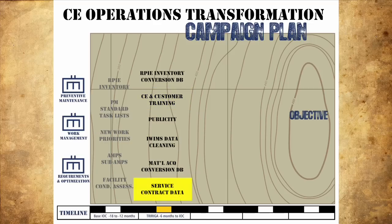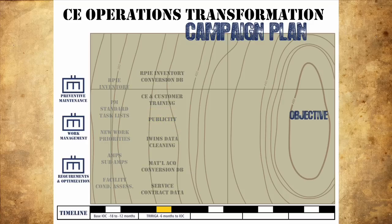Because TRIRIGA will manage cost accounting across the board, you will need to get your service contract information loaded as well. Reimbursable customers will be billed directly based on system information, not individual spreadsheets we may be using today. All of these efforts will place a huge demand on CE staff, not just in operations. Each installation will need to work with their customers to potentially slow or stop certain kinds of work just prior to conversion and slowly ramp back up to full speed once the conversion is completed successfully.